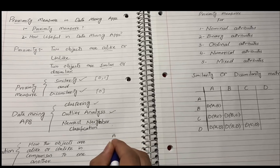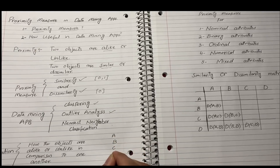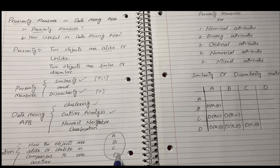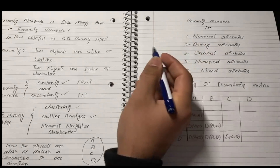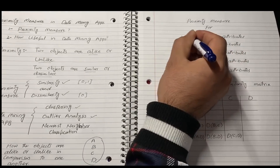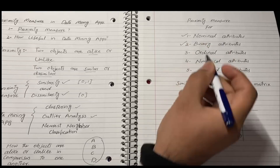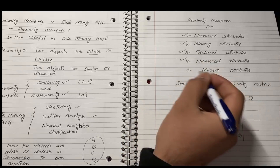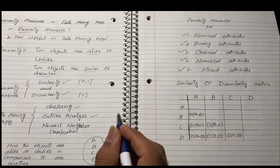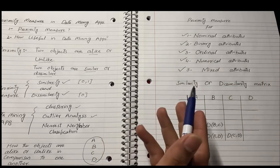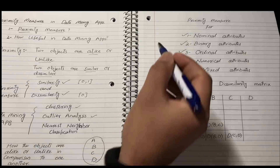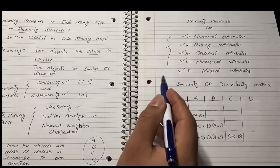Suppose we have different objects — for example A, B, C, or D. This dataset could have nominal attributes, binary attributes, ordinal attributes, numerical attributes, or mixed attributes. We have different formulas and different strategies to find out proximity measures for each type.